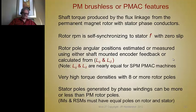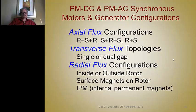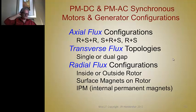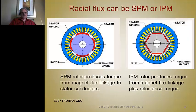Another characteristic is that the number of poles in the stator don't have to equal the number of poles in the rotor, unlike other machines. Axial flux versions can be configured as rotor-stator-rotor, stator-rotor-stator, or single rotor and single stator. Transverse flux topologies can be single or dual-gap — very complicated but useful. The most common are radial flux machines, which can have surface magnets (SPM) or internal magnets (IPM).